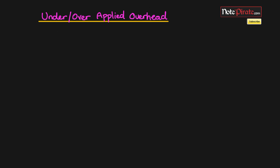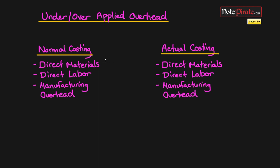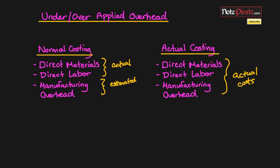If you remember from last tutorial, we had normal costing and we also looked at actual costing. The differences were that direct materials and direct labor were actual costs for normal costing, but the manufacturing overhead was actually estimated — it was a budgeted amount — while in actual costing, all three were actual costs. So why would we ever do normal costing? Well, if we want relevant and timely information we need to make estimates so we can plan and execute decisions. That's probably why it's called normal costing.